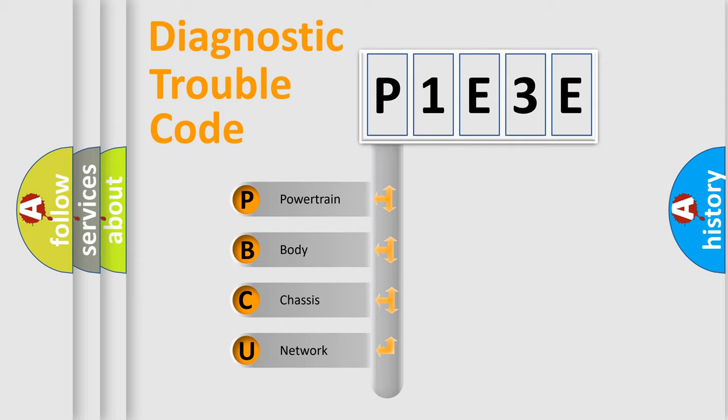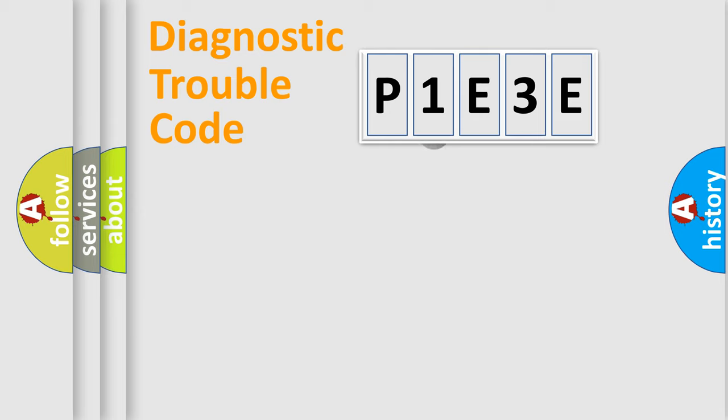We divide the electric system of automobile into four basic units: Powertrain, body, chassis, network. This distribution is defined in the first character code.